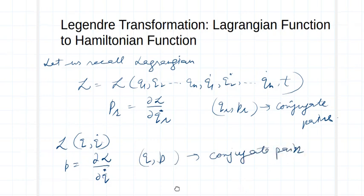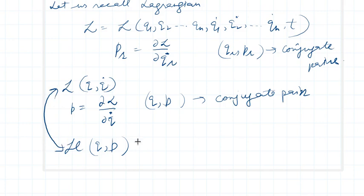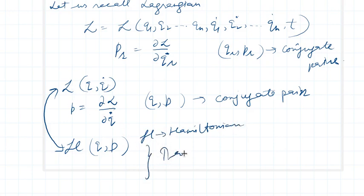Our motive is to find another function which depends upon q and p, not upon q-dot. That means we need a type of relationship between the Lagrangian L and the Hamiltonian H. This H we call the Hamiltonian function. This can be done with the help of some transformation — a transformation relation which relates these two.